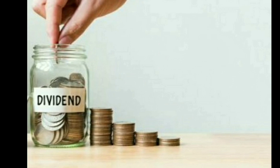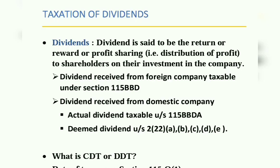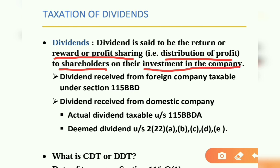Agar company surplus ko rakha hai zyada hai, then company can do so and that is retained earning. So in today's video, I will discuss what is dividend and what is dividend distribution tax. What is dividend? As I have already discussed — it is reward or profit sharing, that is distribution of profit to its shareholders on their investment in the company. As per their shareholding, they get the dividend out of the profit — it can be the current year profit or accumulated profit.